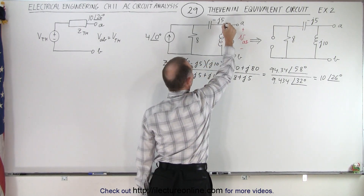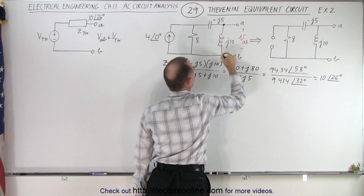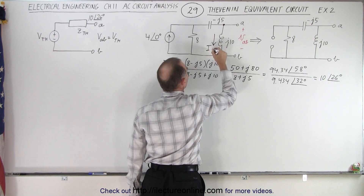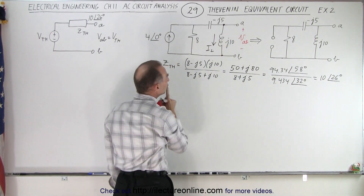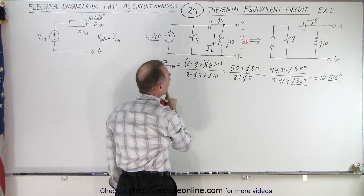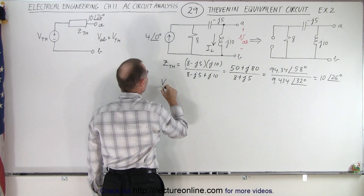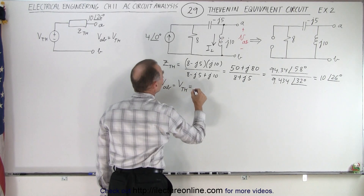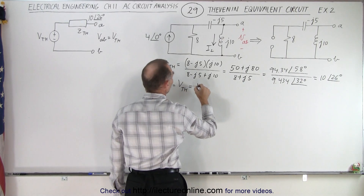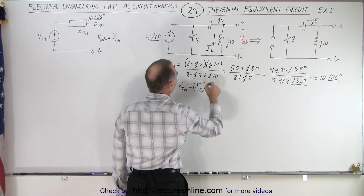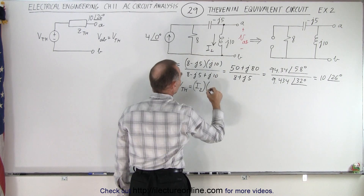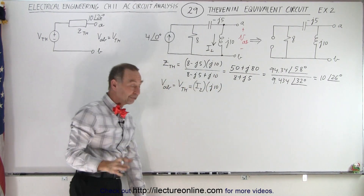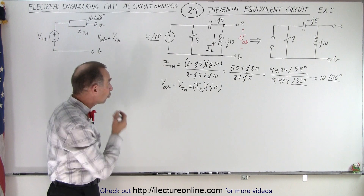So that means we want to find the voltage across here, which would be equal to the current through there — let's call that I2, the current through the second branch. The voltage from A to B is equal to the Thévenin voltage, which is equal to I2 multiplied by the impedance of the inductor, which is j10. So all we have to do now is find I2.